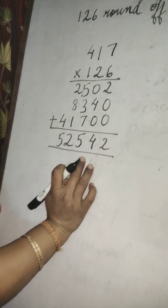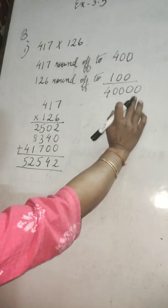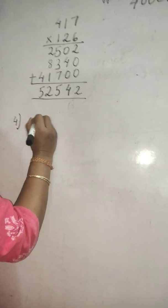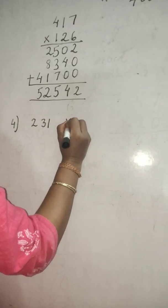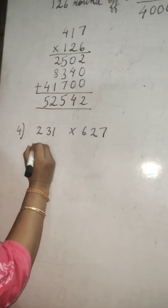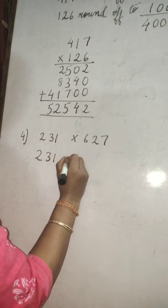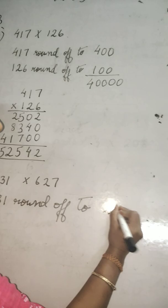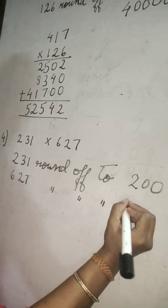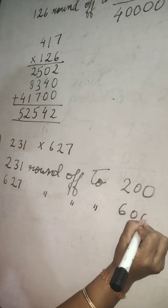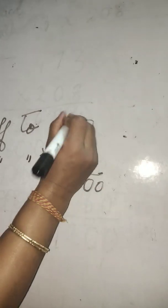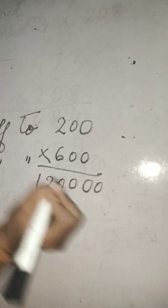This is the exact product and this is the estimated product. One more example: 231 into 627. First, round off 231 to 200. Now find the estimated product: 4 zeros, and 6 times 2 is 12. This is the estimated product: 120,000.